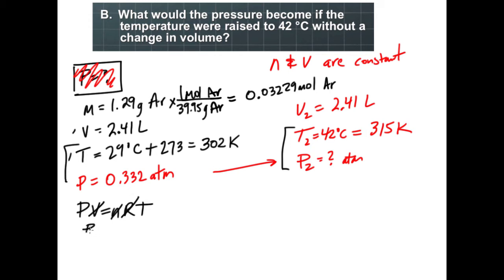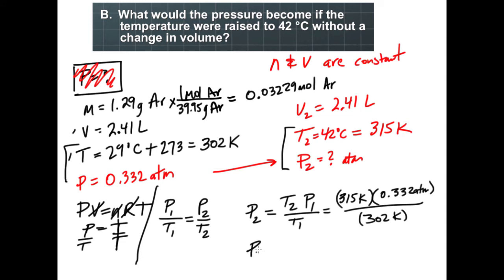I can use PV equals NRT to solve for the two variables that are changing. My pressure is changing, my volume is constant, my moles are constant, and R is constant. So I want to take pressure and temperature and bring them to the same side. If I divide both sides by temperature, I end up having P1 over T1 equals P2 over T2. I can solve for pressure 2, which equals T2 times P1 over T1. After plugging into the equation and simplifying, I end up with a pressure of 0.346 atmospheres.